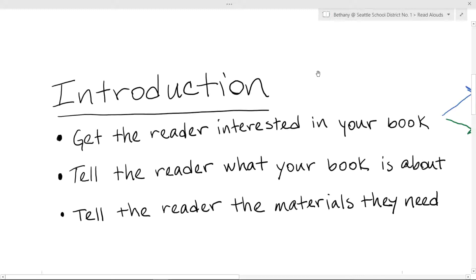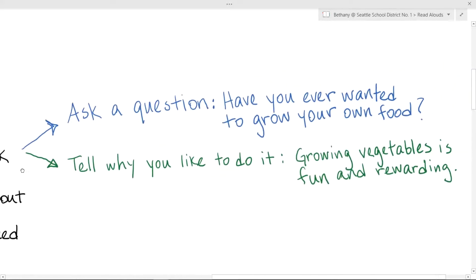First, it should get the reader interested in your book. There are two ways that you might want to do that. One way is to ask a question. For example, in my book, I could write, have you ever wanted to grow your own food?